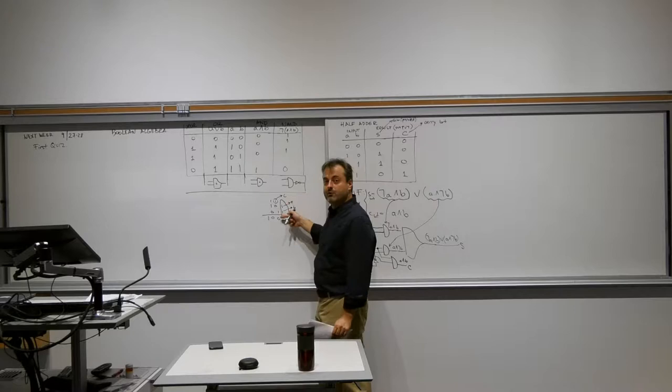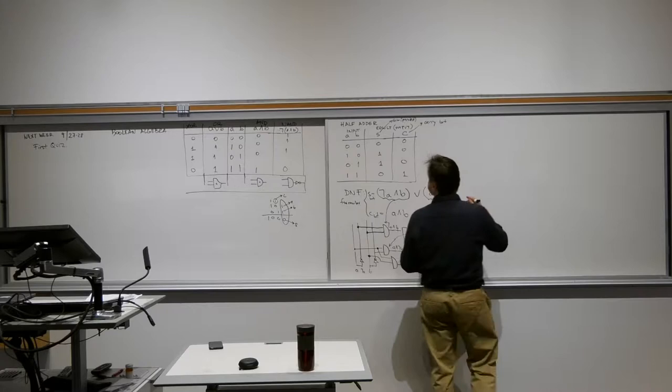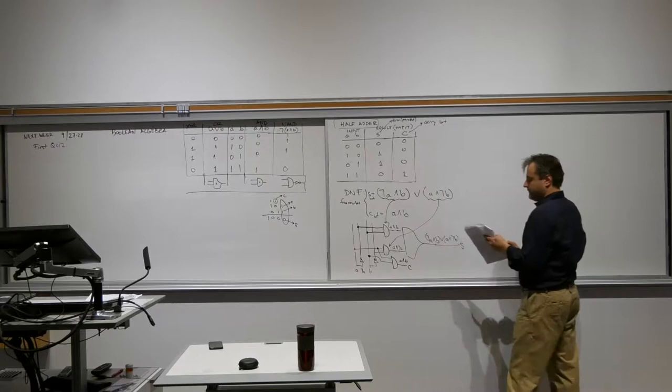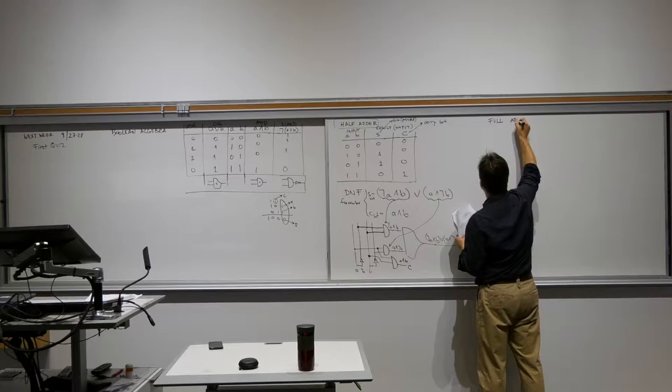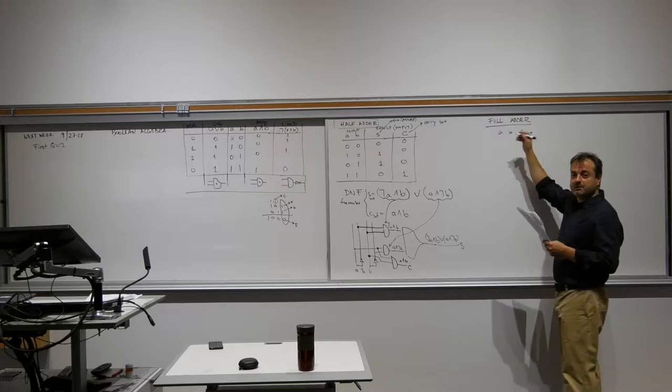For the next column and the next column I might have some carry inputs. So how do I modify that? That's why this is called a half adder — it's not the full story. How about the full story, which is called a full adder?